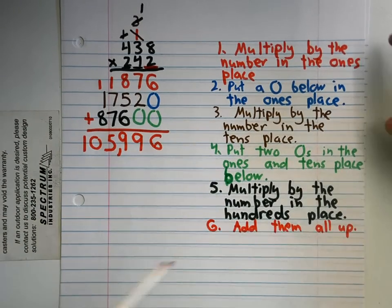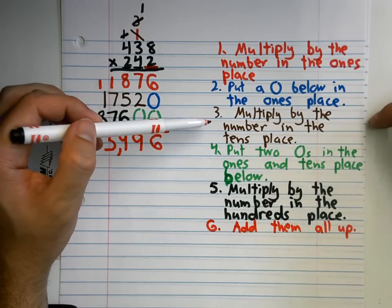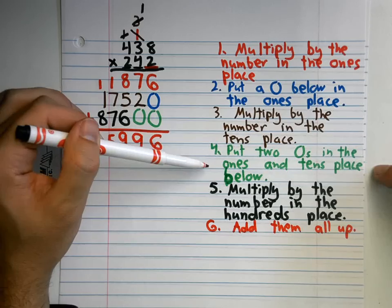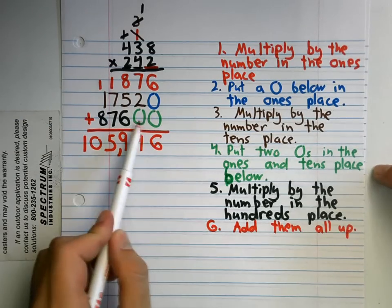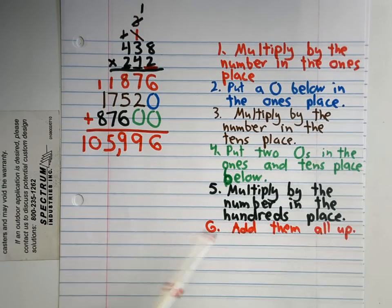These first ones, before we learned about how to do steps one, two, three, but now we have to put two zeros in here when we start multiplying by our hundreds place, and just like before we add them all up.